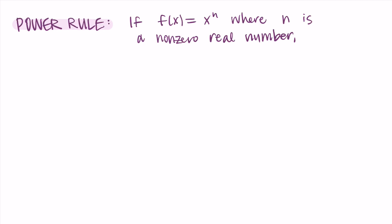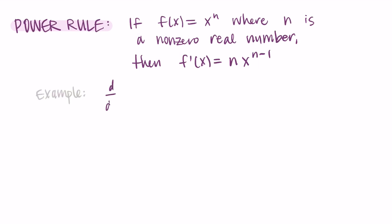Back to the power rule: if we have a function f(x) = x to the n, then its derivative f′(x) is n times x to the power of n minus 1. We decrease the power by one and bring that original exponent to the front. For example, the derivative of x squared: the 2 comes in front and we decrease the exponent by one, giving us 2 times x to the first power, which is just 2x.